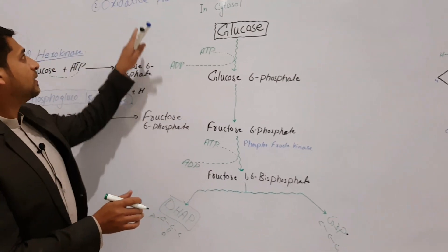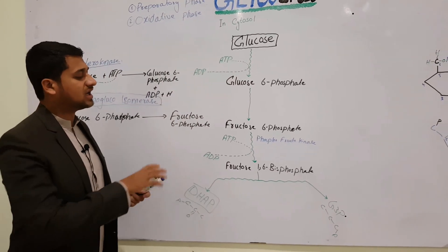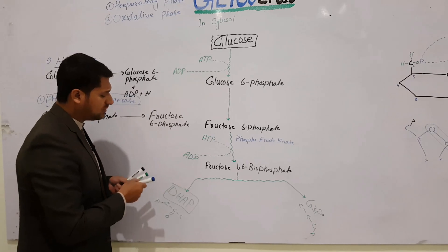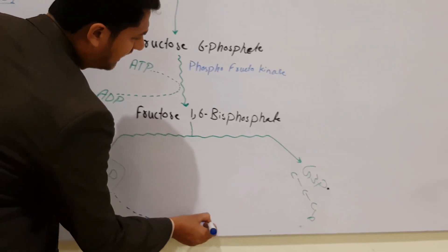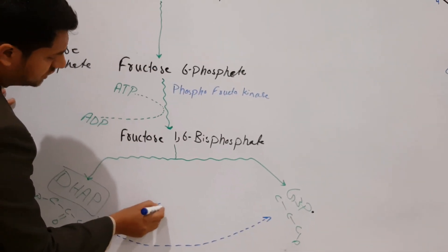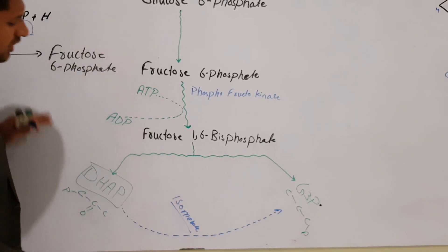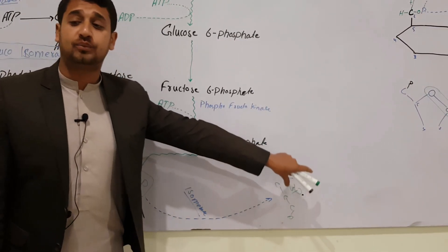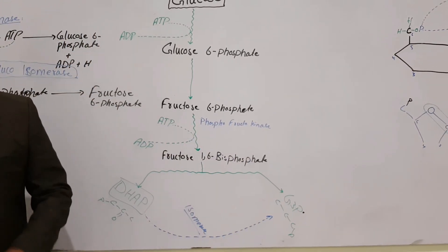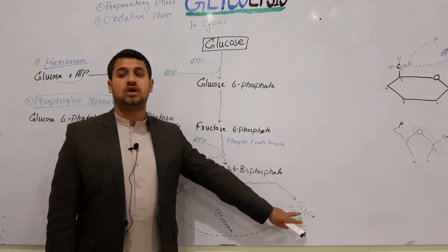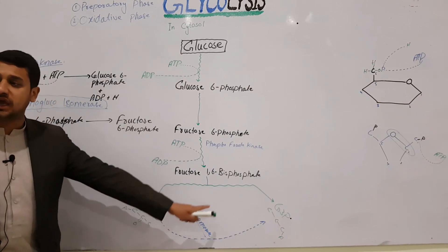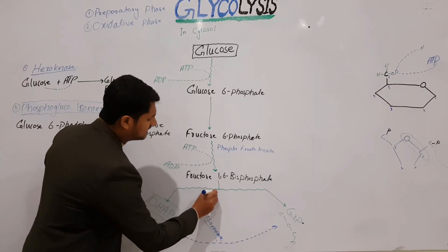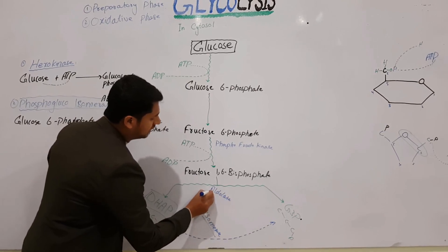This is the end of the preparatory phase. However, an important step takes place here: the process proceeds in the oxidative phase from G3P only. Therefore, isomerase enzyme converts dihydroxyacetone phosphate into G3P. The enzyme that splits fructose-1,6-bisphosphate is called aldolase.